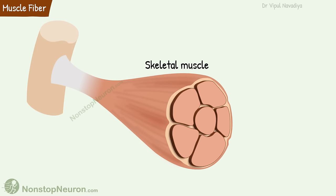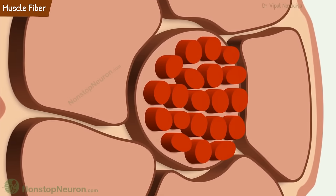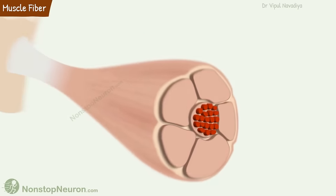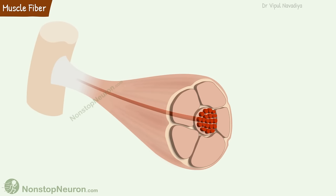This is a cut section of a skeletal muscle. As you can see, the muscle is made up of muscle fascicles. If we look at individual fascicles closely, we can see that it is made up of multiple muscle fibers. The fibers are aligned linearly. Muscle fibers are also called myofiber or simply muscle cell. It is the smallest contractile unit of the muscle. It is elongated and in most skeletal muscles, it extends the entire length of the muscle. So this is the gross structure of skeletal muscle.